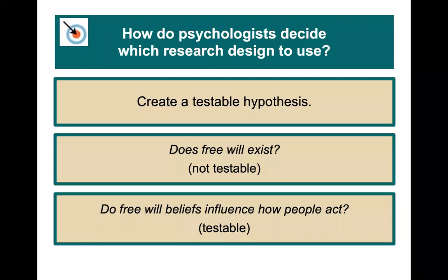How do psychologists decide which research designs to use? The number one thing is to create a testable hypothesis. A question like 'does free will exist?' isn't really testable, but 'do free will beliefs influence how people act?' is. You can measure free will beliefs with a survey and then measure a behavioral outcome, looking at both variables in either an experimental or a correlational design.